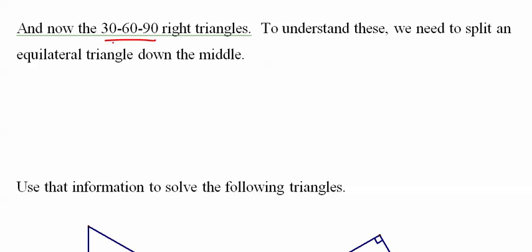Now, the other triangles are 30, 60, 90 triangles. To understand them, take an equilateral triangle and chop it down the middle.